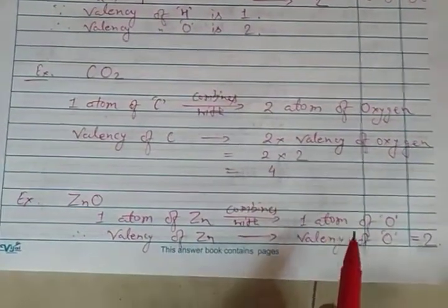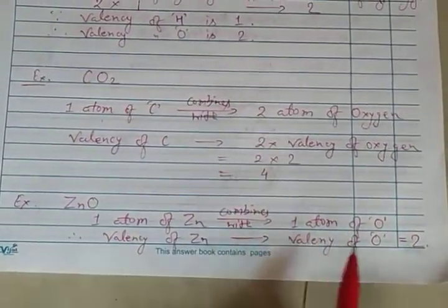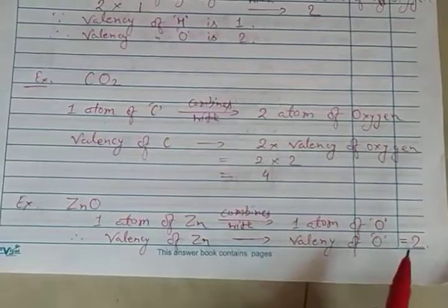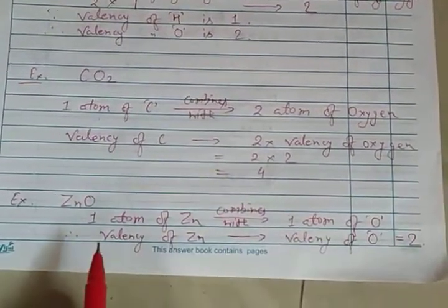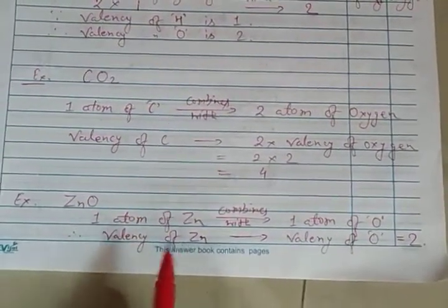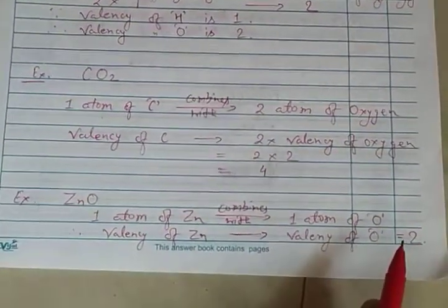Because the valency of oxygen is 2, the valency of zinc will become equal to it. So the valency of zinc is also 2.